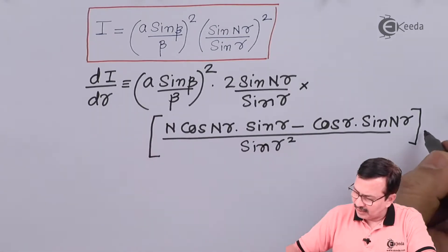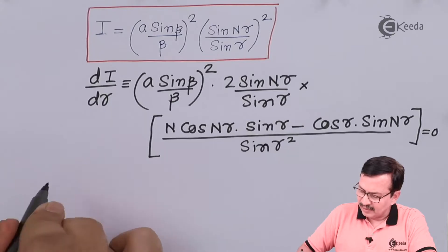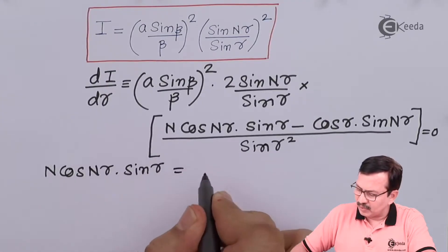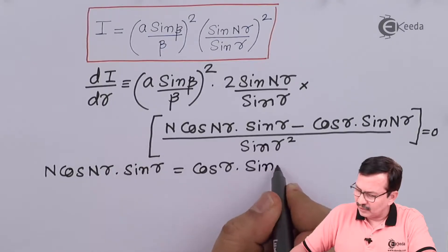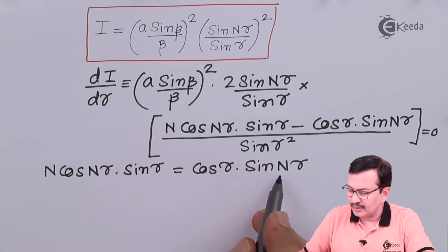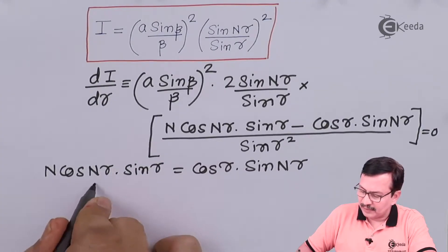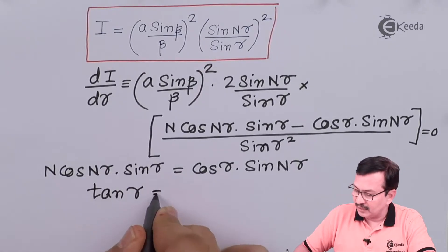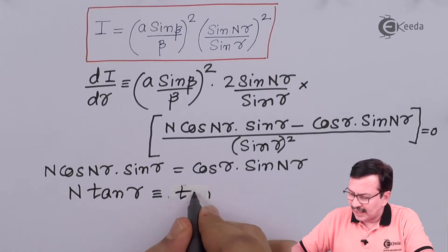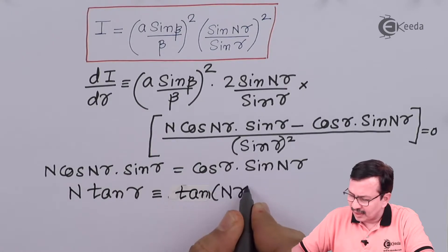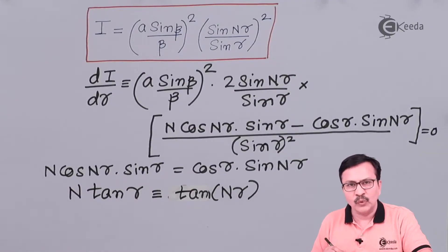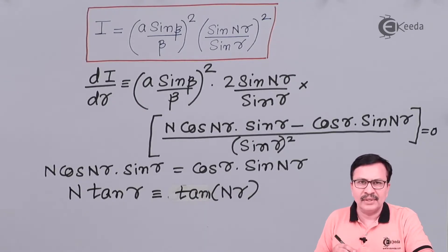This will now turn out to be equal to zero. Hence we have n·cos(nγ)·sin(γ) is equal to cos(γ)·sin(nγ). So this gives us tan(nγ) is equal to n·tan(γ). All the values of γ that satisfy this particular equation will give you the positions of the secondary maxima.